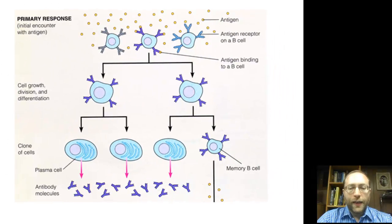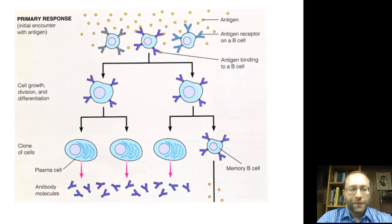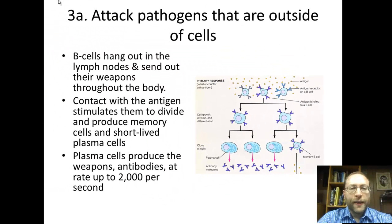How they attack is different. We'll first look at how pathogens are attacked outside of the cell, and those involve the B cells. Here I have a diagram showing how they reproduce and how the cells will change. They can change into memory cells, which we'll discuss later, or they can change into plasma cells, and the plasma cells produce the antibodies. The reason why they hang out in the lymph nodes is because things throughout the body end up passing through the lymph nodes before going into the blood.